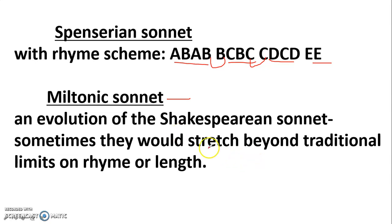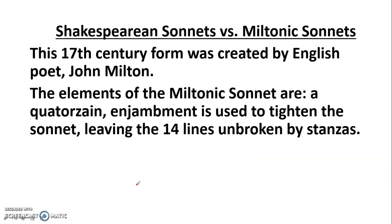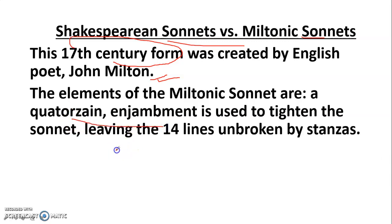Now our main topic: Shakespearean sonnet versus other sonnets. First, Shakespearean versus Miltonic. The Miltonic sonnet is a 17th-century form created by the English poet John Milton. One key element of the Miltonic sonnet is leaving the 14 lines unbroken by stanzas. Milton lived through the final eight years of Shakespeare's lifetime and continued to push the sonnet form forward.